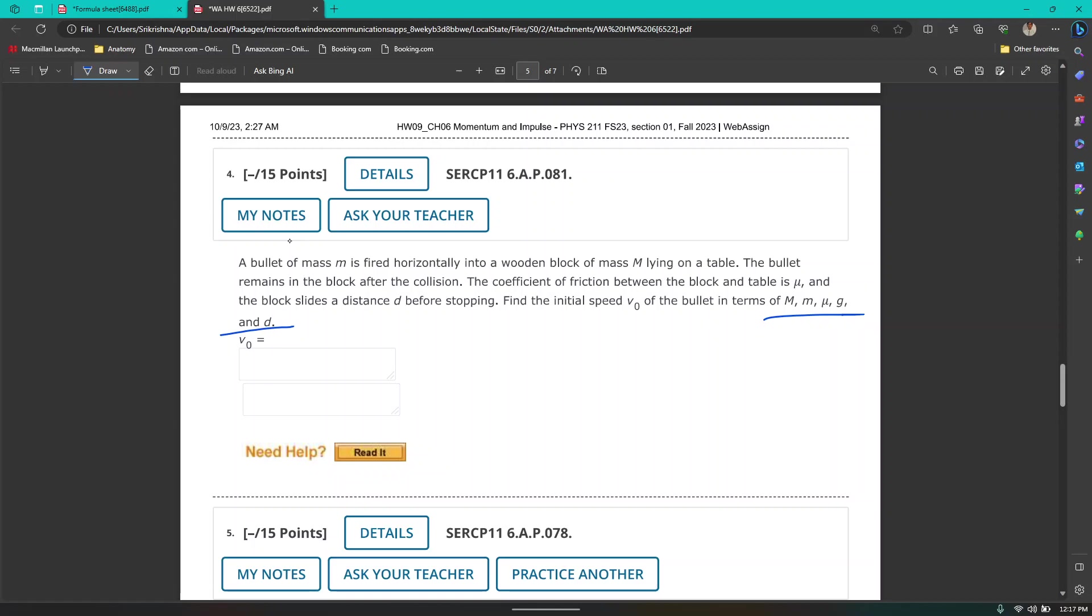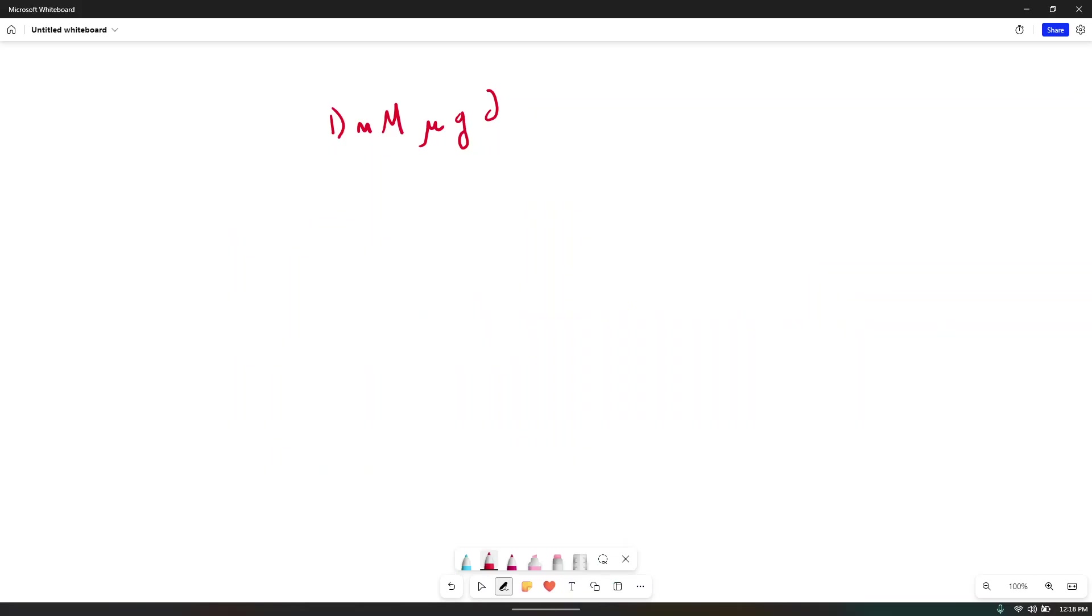Part two is important information from the question. This right here: the bullet remains in the block after the collision. That means we're not dealing with an elastic collision. We're dealing with an inelastic collision. In an inelastic collision, kinetic energies are not equal in the initial and final. The only way to realize that is the bullet remains in the block, which is inelastic. Part three is what do we need to know. What we need to know will be V naught equals question.